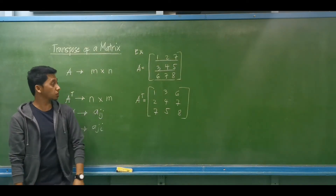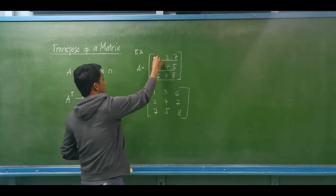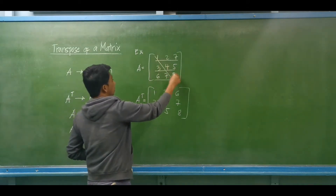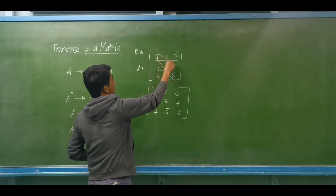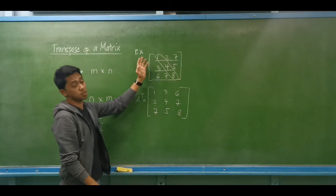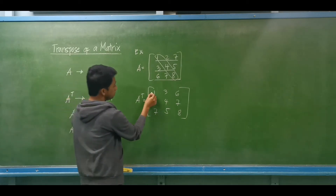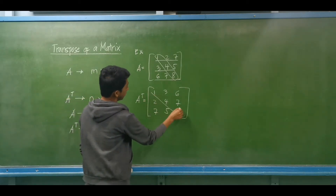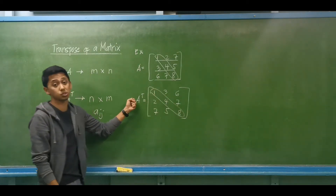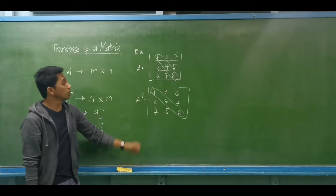For square matrices, if you observe, the diagonal elements will remain the same. We have diagonal elements 1, 4, 8 in matrix A, and the diagonal elements of the transpose matrix are also 1, 4, 8.